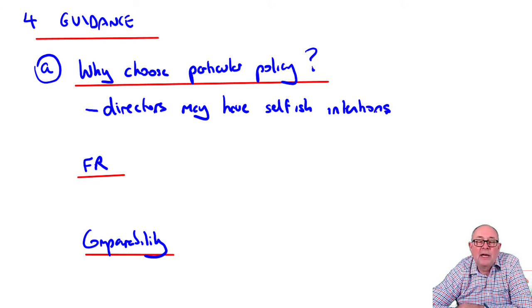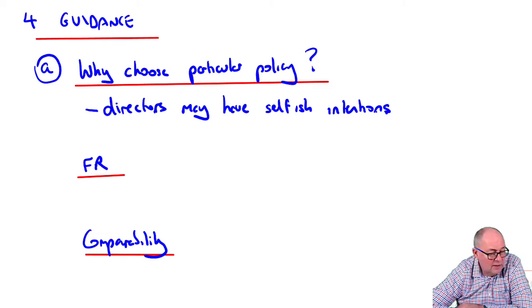FIFO in stock valuation or inventory valuation gives you higher profit than average if prices are going up. Maybe they want a higher profit. Faithful representation: just put down the definition and then apply it a bit.